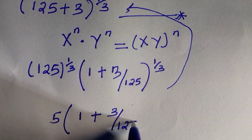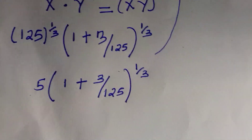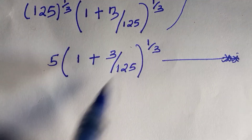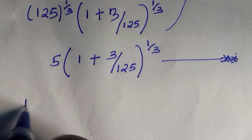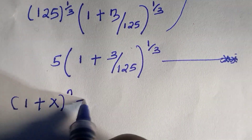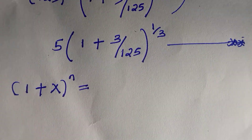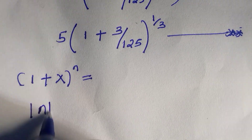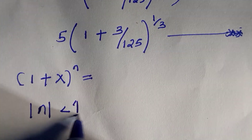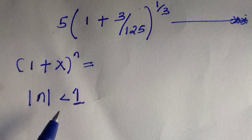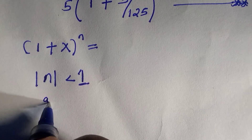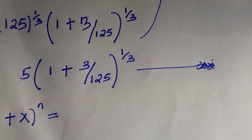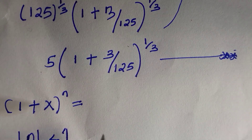We now deal with the bracket only. From the binomial theorem, if you have (1 + x) to the power of n, the condition is that the absolute value of n must be less than one — meaning n takes fractional or negative values, of the form a divided by b.